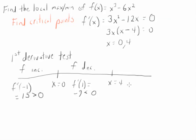And finally, we check over here to the right of 4. Oh, let's use 5 as a test number. f prime of 5. And if you plug that in, what you'll get is positive 15. That's positive. So that means f is increasing.